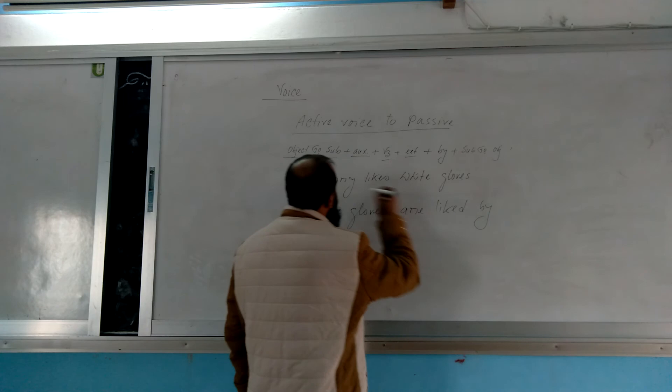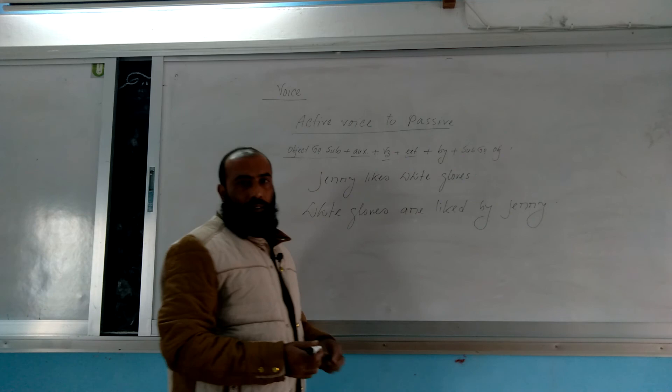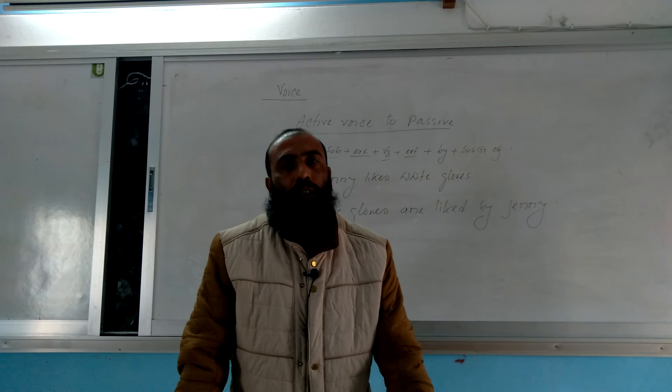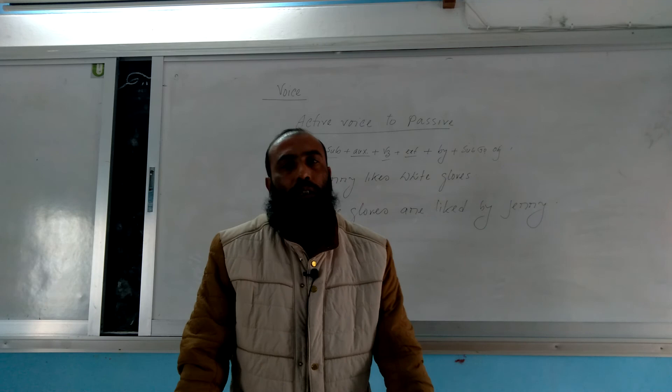To make an active sentence passive: first we make the object the subject. Then according to the rules, we use the appropriate auxiliary verb.